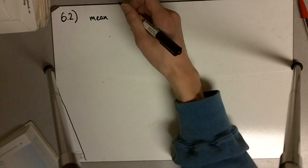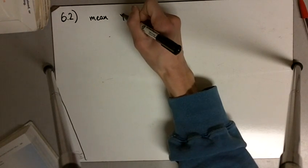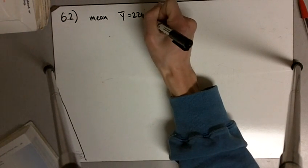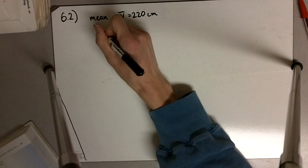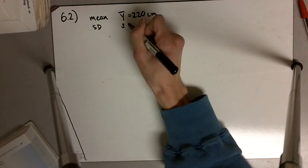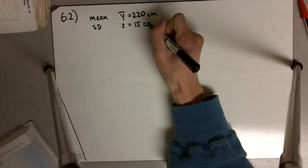So this was a sample of n corn plants. Our mean is going to be y bar, and that's 220 centimeters. And the standard deviation is going to be s, and that's going to be 15 centimeters.